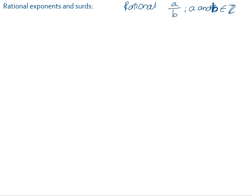A rational number is a fraction, and a surd — another name for a surd is a radical — is any root of a non-perfect root. So for example, if you are finding the square root of 10, because 10 is not a perfect square, its square root will be a surd. The cube root of 6 — 6 is not a perfect cube, so its value will not be an exact number; it will be an irrational number. So those are our surds and rational numbers.